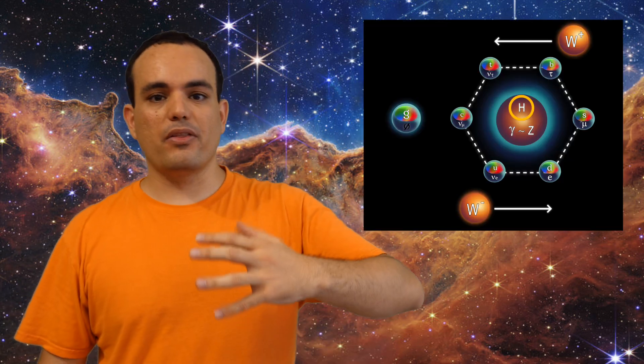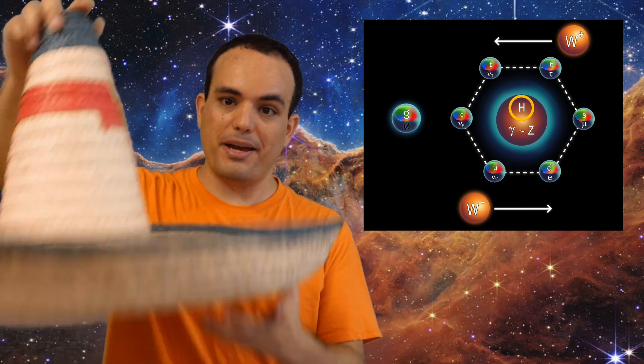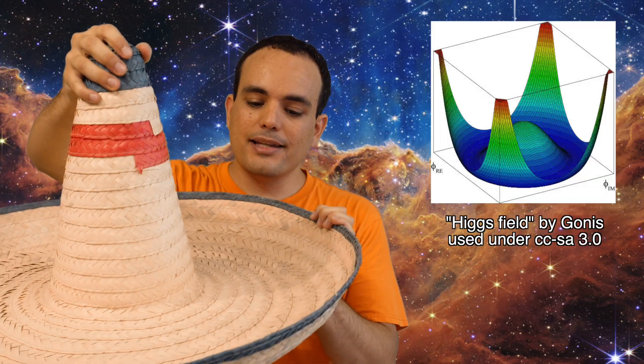And finally, we have the Higgs boson. So turns out that there's a field all over nature. And this field has a shape of a Mexican hat. That's not a joke. And our entire universe is in this part of the hat. And we know that this is true because this is the only thing that fits with some complex equations from quantum field theory. And when particles interact with this field, they gain mass.